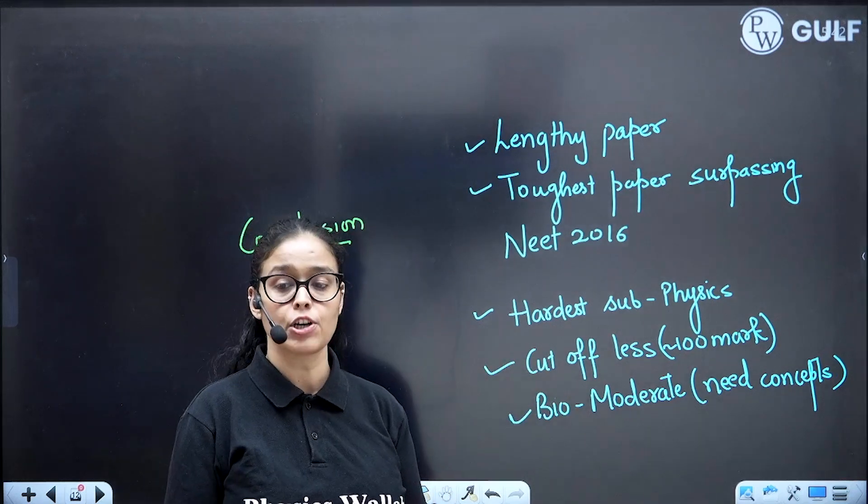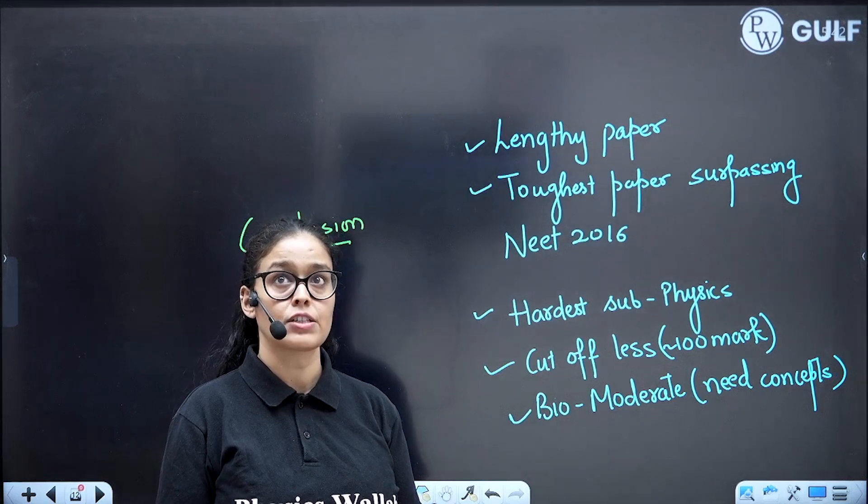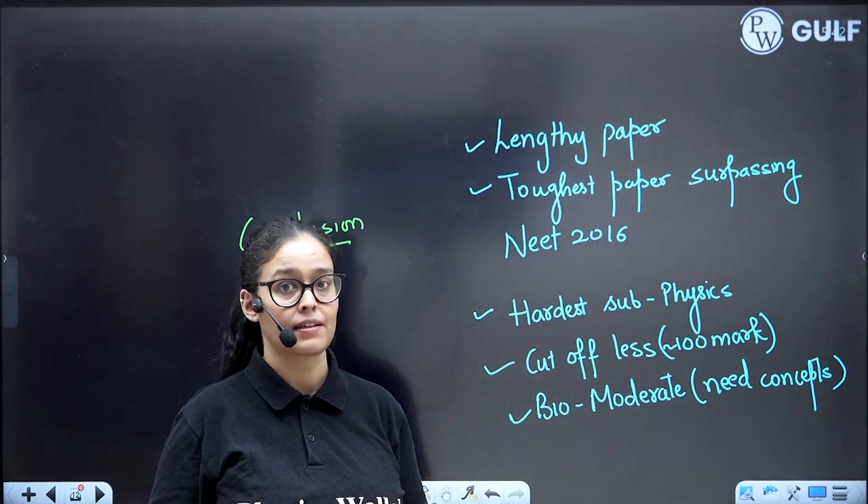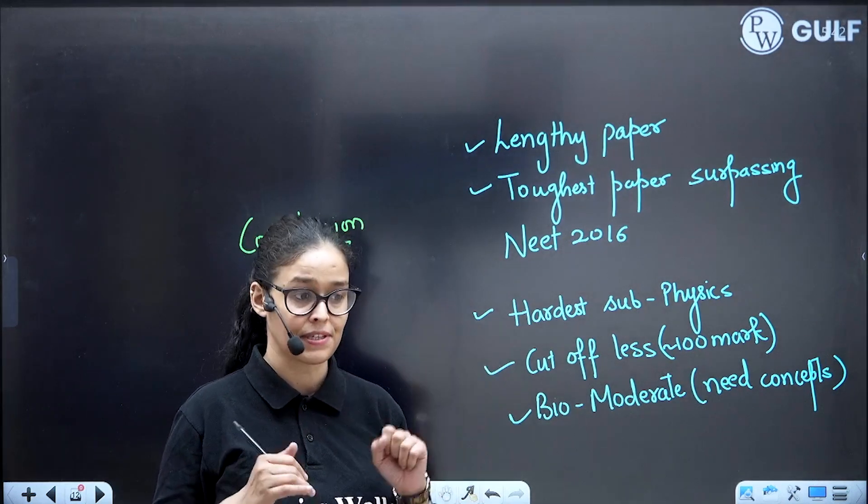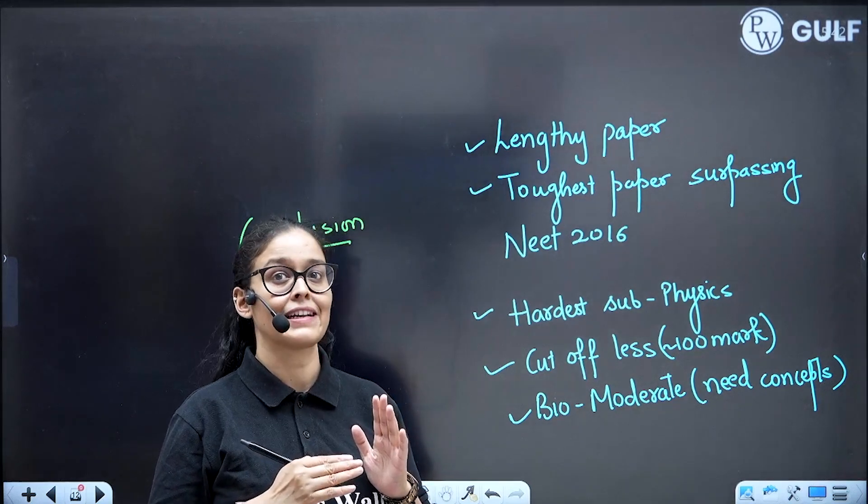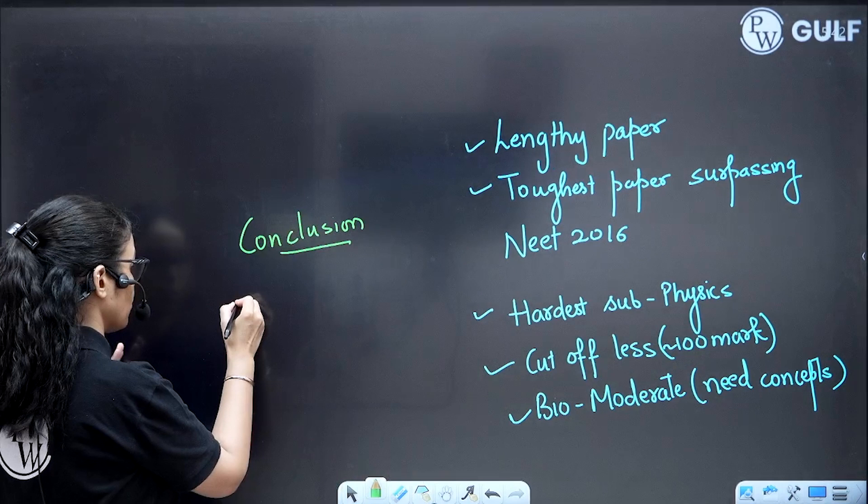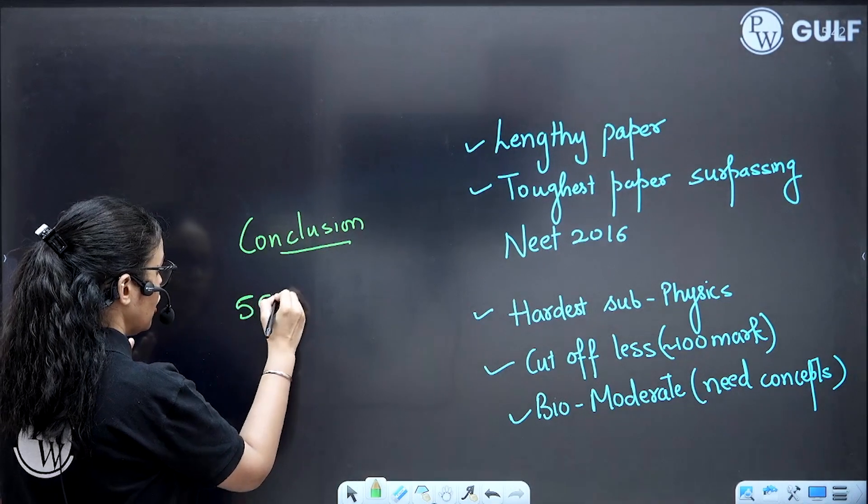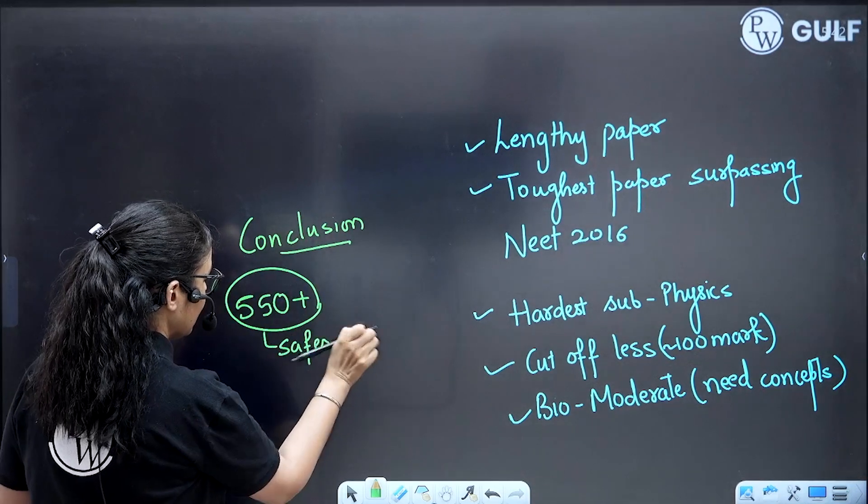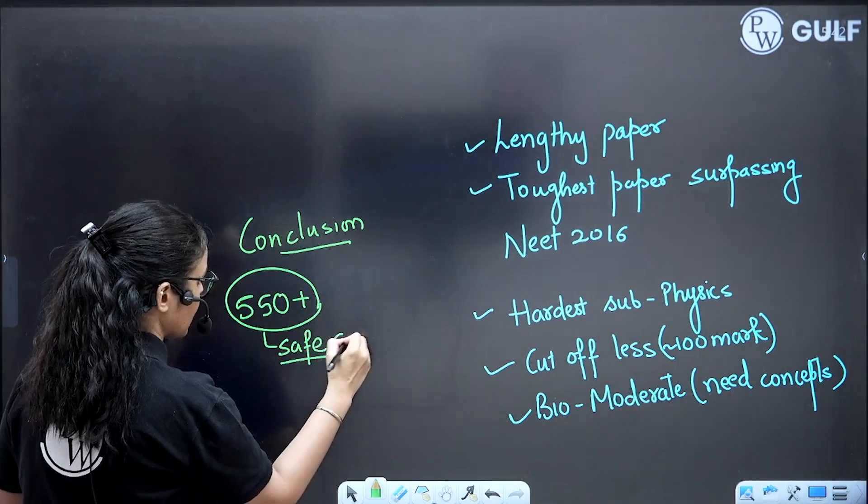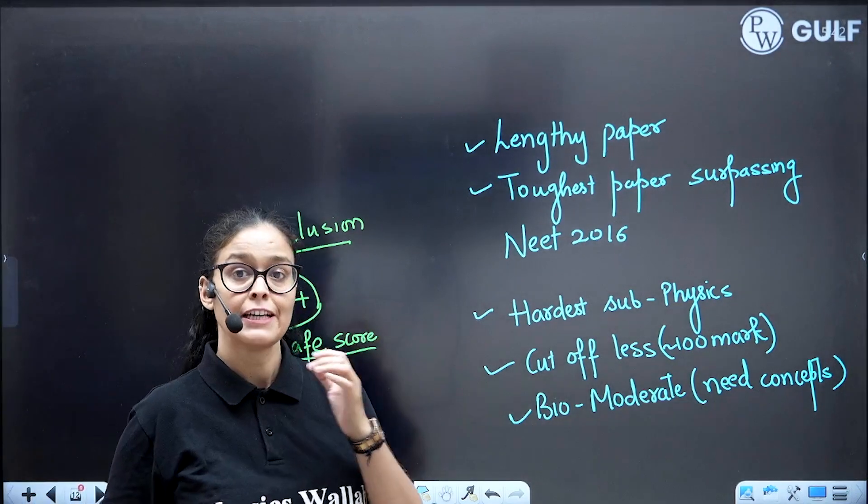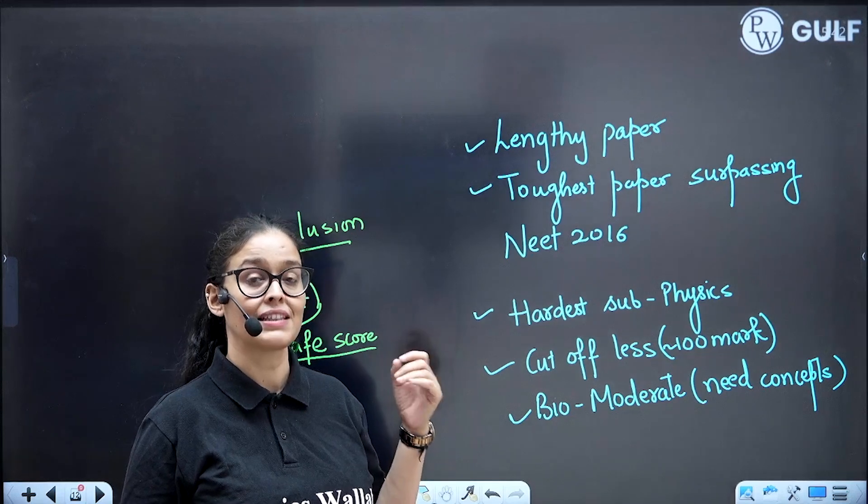When we talk about cutoff, suppose previous year the cutoff was 700 or you got admission in 650 marks, so 650 or 640 marks were safe previous year. This time you can see a drop of 100 marks. So if you're getting around 550 plus, that is the safe score for general category. 550 plus score is the safest score this time as per the level of exam, because it was difficult. This time you can expect admission even at 550 marks in medical colleges.